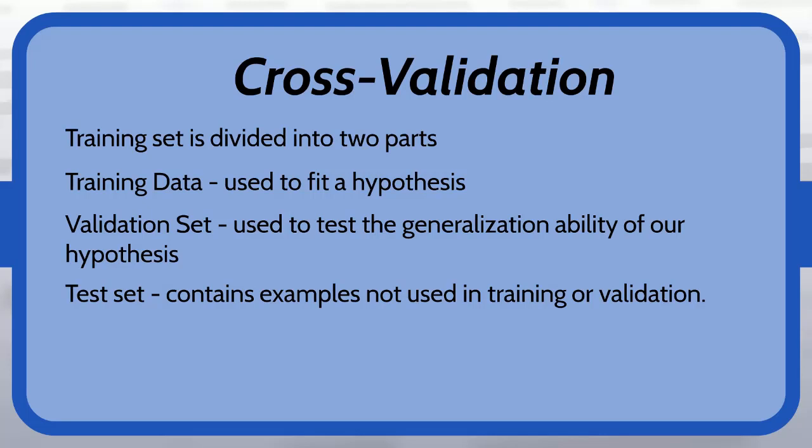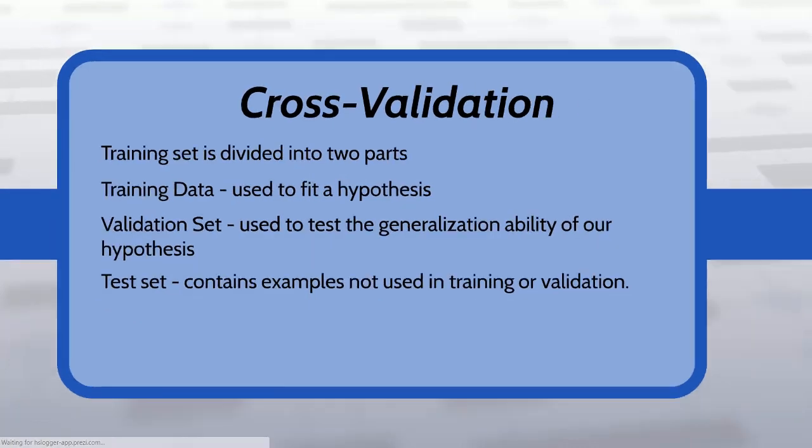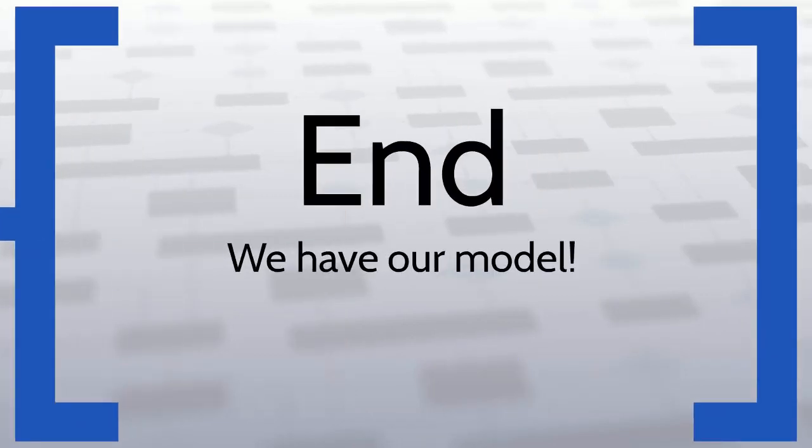So if you're needing to report error, you should probably divide the set into three parts, the training data to fit a hypothesis, the validation set to test generalization ability or test and make sure that we have picked the right hypothesis class, and then ultimately a test set to demonstrate the amount of error. So this is going to bring us to the end. We have our model once we've done this process.